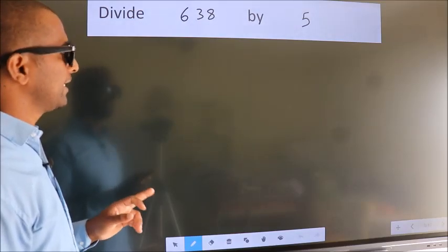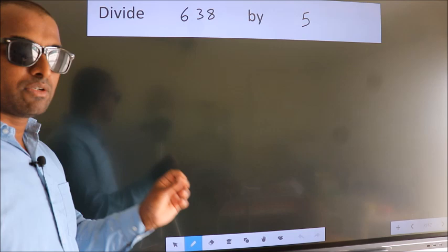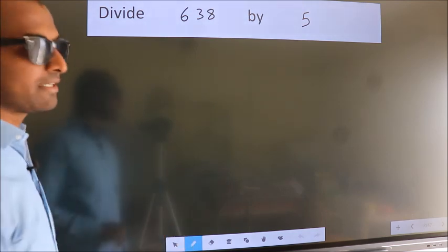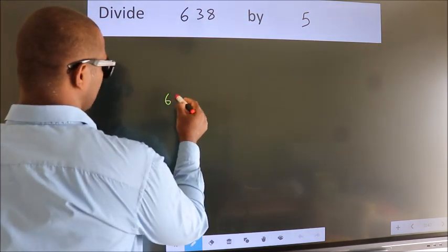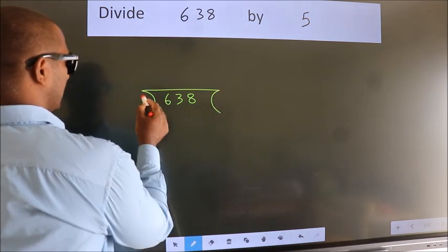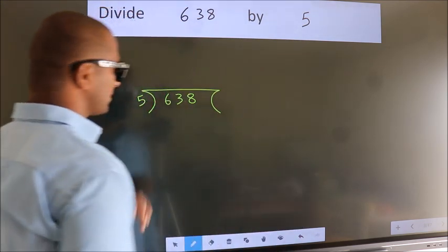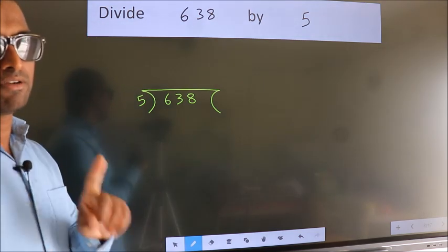Divide 638 by 5. To do this division, we should frame it in this way. 638 here, 5 here. This is your step 1.